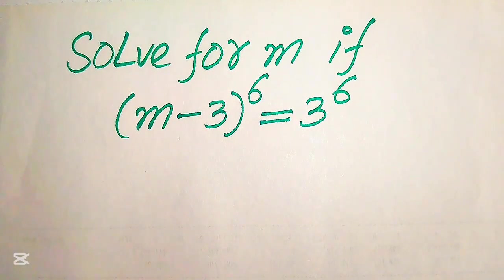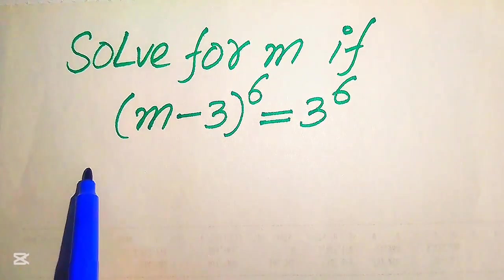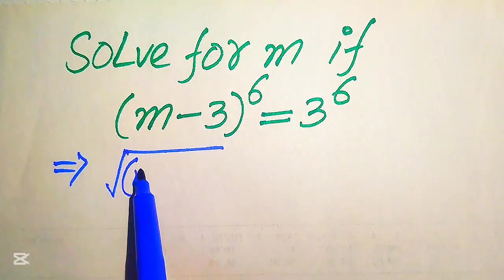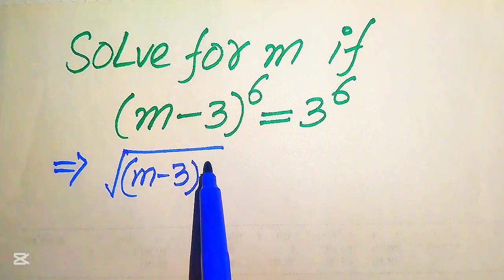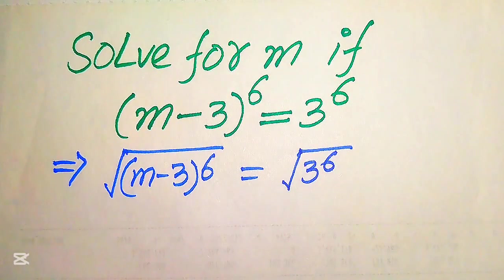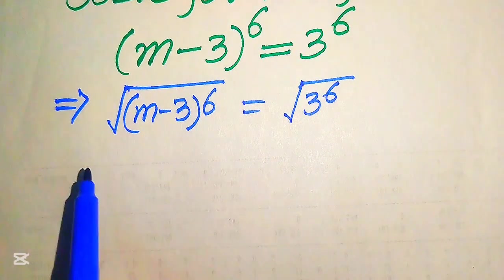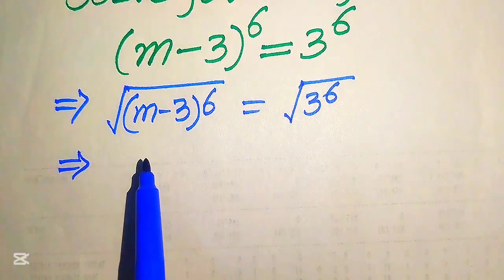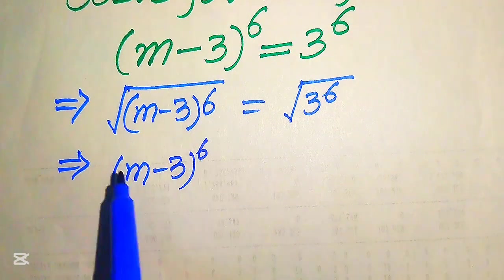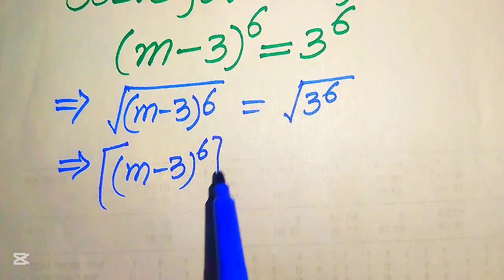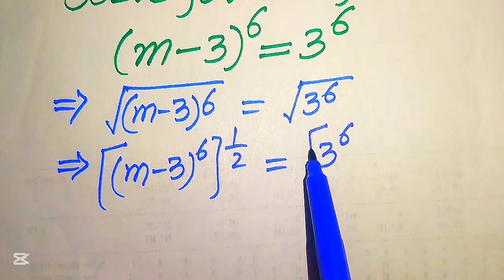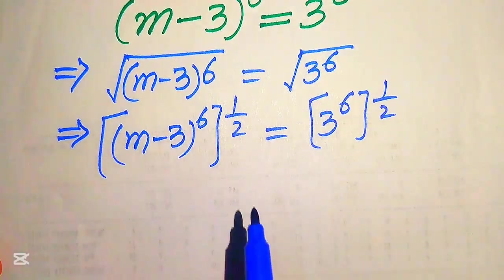The very first step is to take the square root on both sides. When we take the square root, it is written as the square root of (m minus 3) to the power of 6 equals the square root of 3 to the power of 6. We can write this in exponent form as (m minus 3)^6 raised to the power of 1/2 equals 3^6 raised to the power of 1/2.